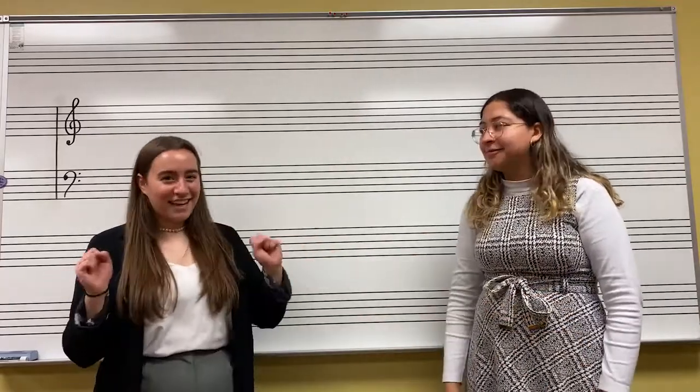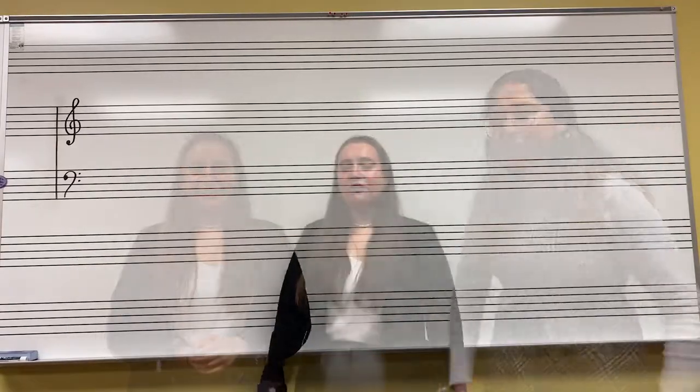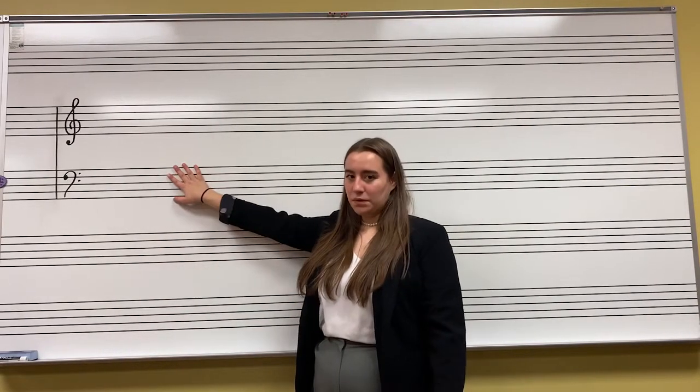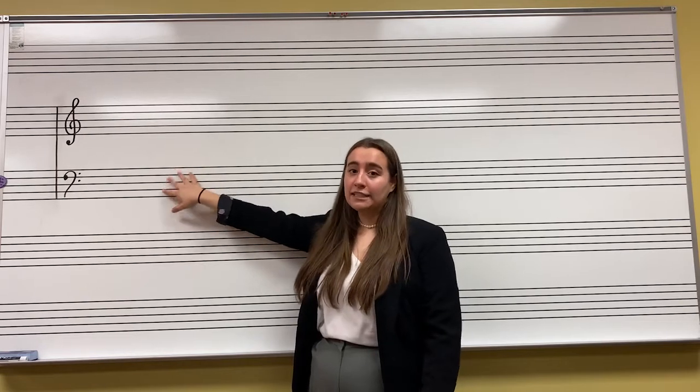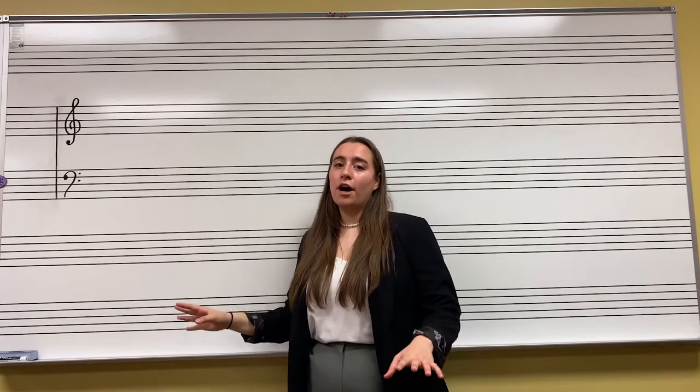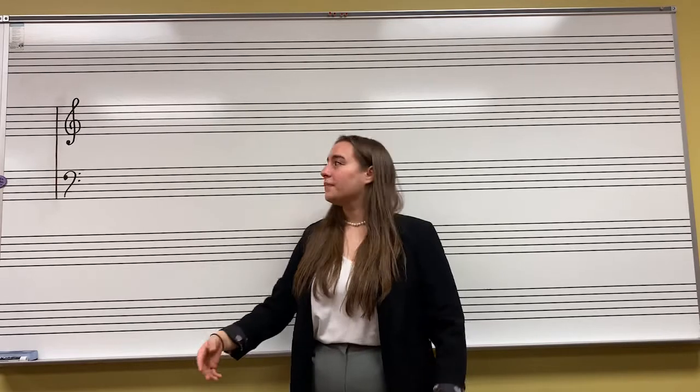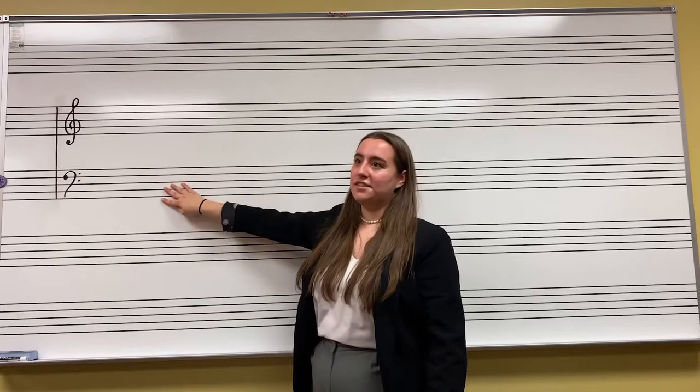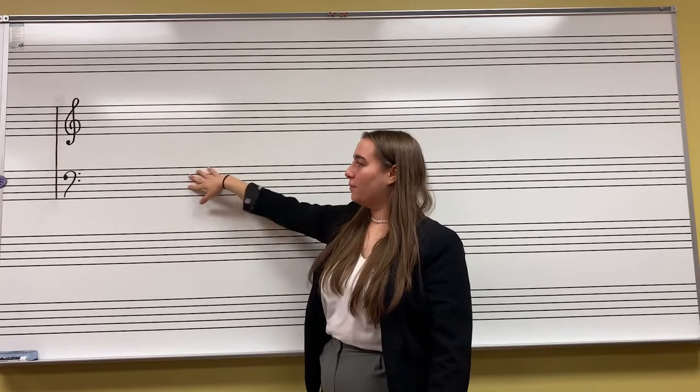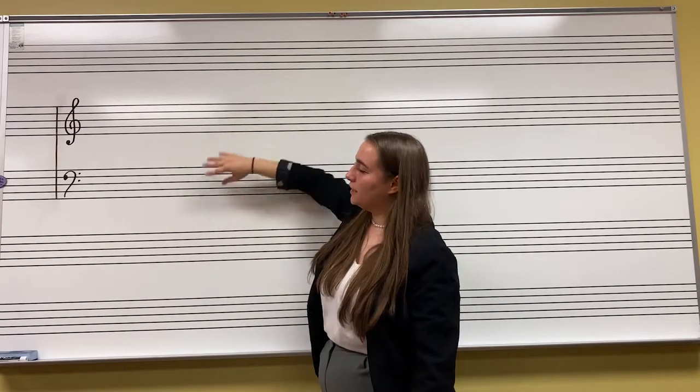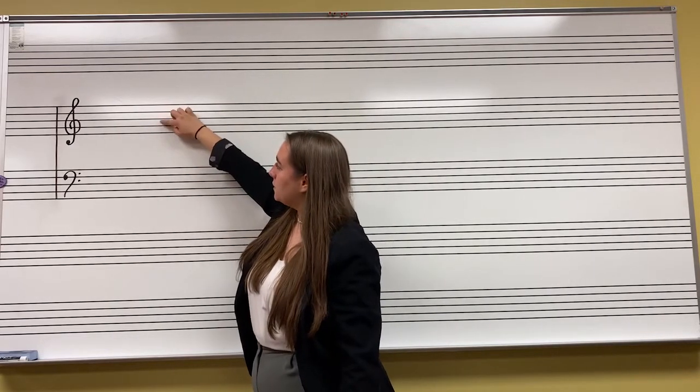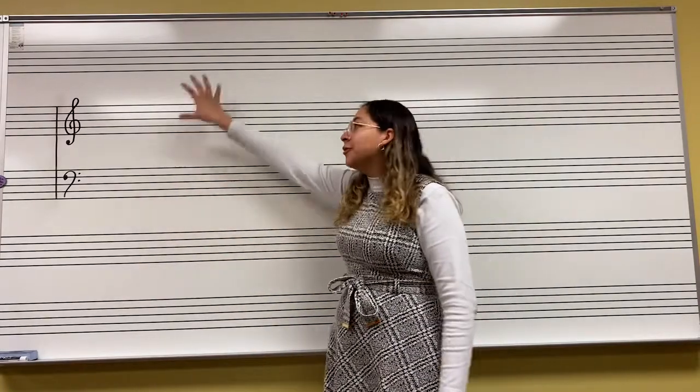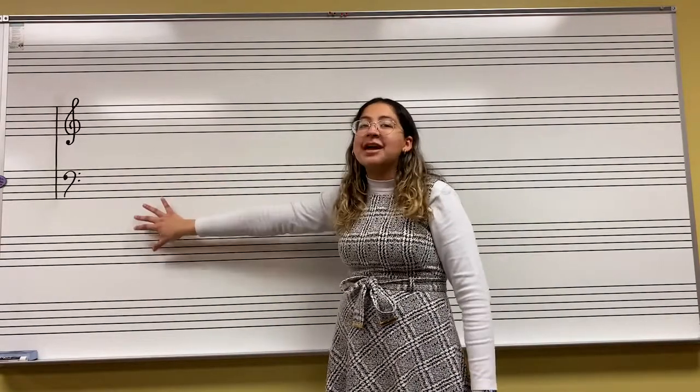All right, so to start off, what is a staff? A staff is where we display musical notation. This is where you'll find your notes, your rhythms, everything you need to know about what you're about to perform. So if we look at this, this is a grand staff. It has two sets of lines here, there's a top one and a bottom one. And within each of these sets there's five lines - one, two, three, four, five - and four spaces. You'll use this type of grand staff if you're playing piano or something that has two different parts.